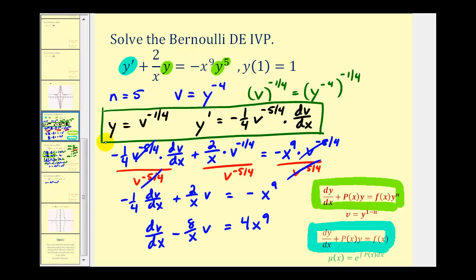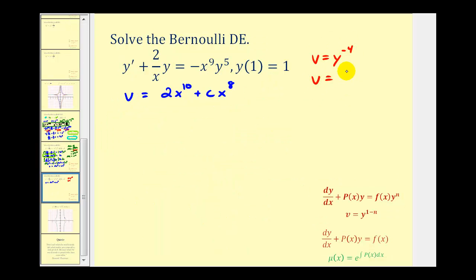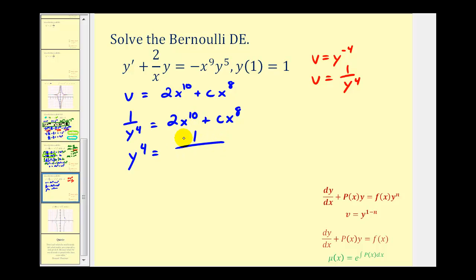Going back to the substitution, v is equal to y to the negative 4th, or equivalently, 1 divided by y to the 4th. Performing this substitution, we have 1 over y to the 4th equals 2x to the 10th plus cx to the 8th. Taking the reciprocal of both sides gives y to the 4th equals 1 divided by the quantity 2x to the 10th plus cx to the 8th. This is the general solution to the differential equation, but since we have an initial condition, we want to find the particular solution and determine the value of c.